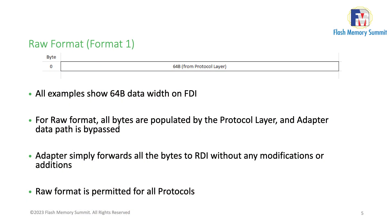Now coming to the different flit formats — there are about six flit formats I'll go through quickly. The first is the raw format, where the protocol layer is allowed to send any bytes across the link. The adapter and physical layer have no notion of what the flit boundary might be; it's all up to the protocol layer. In this case, link reliability things like CRC and FEC have to be taken care of by the protocol layer. The adapter simply forwards all bytes to the physical layer. We support this format across all protocols — PCIe, CXL, and streaming.